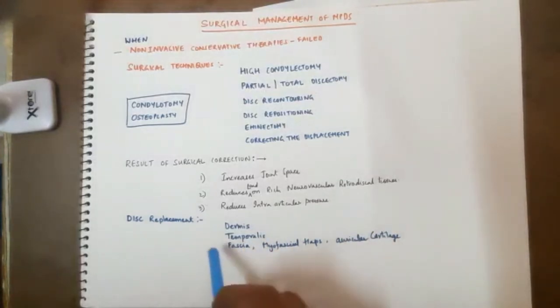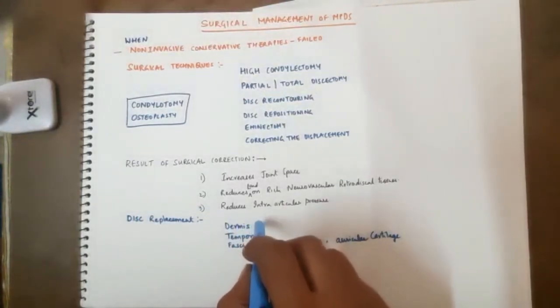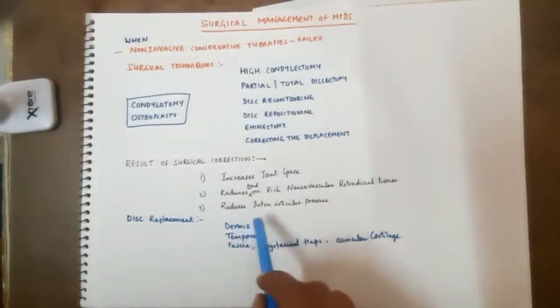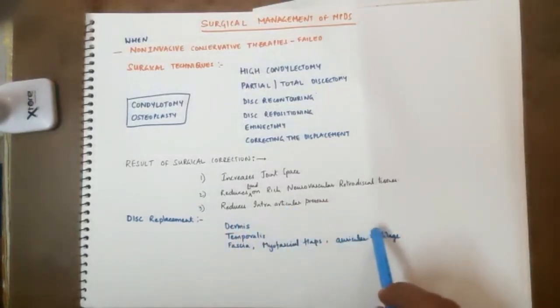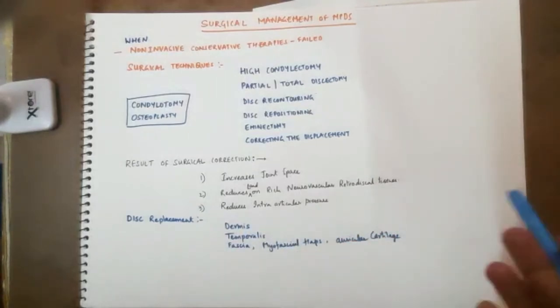At the same time there are certain disc replacement, recontouring things like dermis, temporalis fascia, myofascial flaps, or auricular cartilage, etc. There's a big list given in all surgical books, all oral and maxillofacial surgery books, you can go there and read.